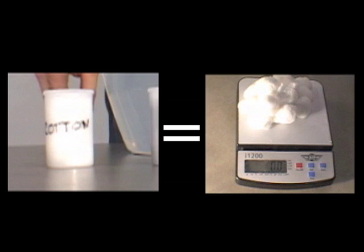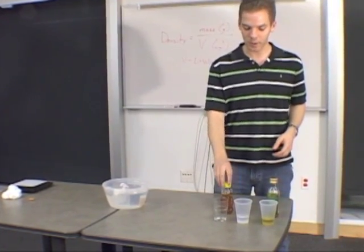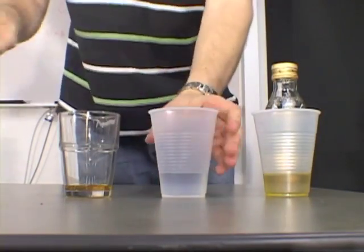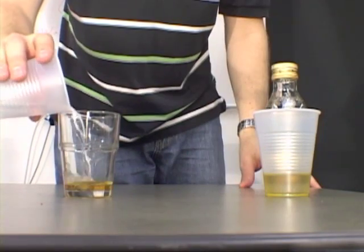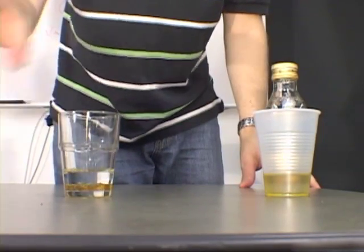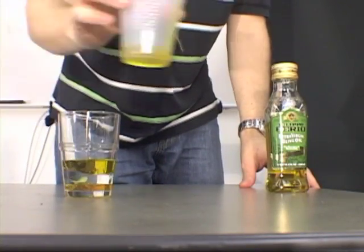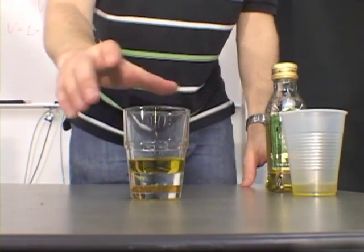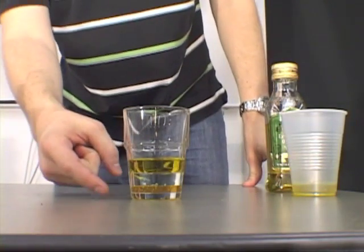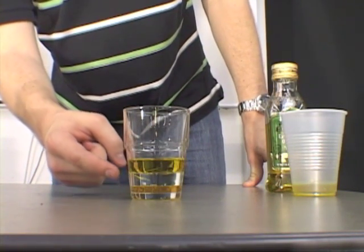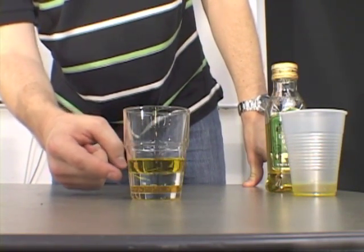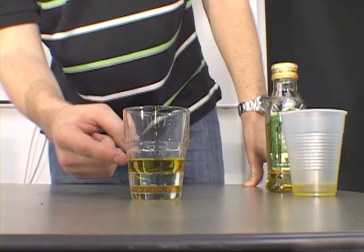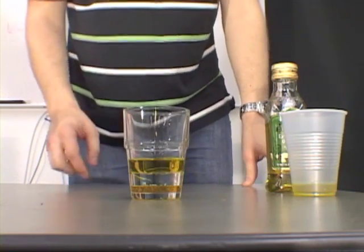In this last experiment, I'll combine equal parts of honey, water, and oil into this glass. We see three layers form: on the bottom is honey because it has the highest density, in the middle is water, and on the top is oil because it has the lowest density.